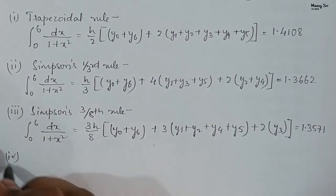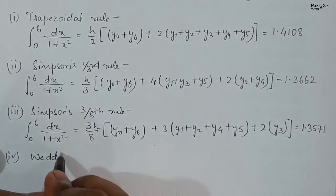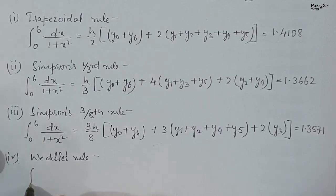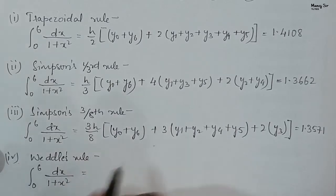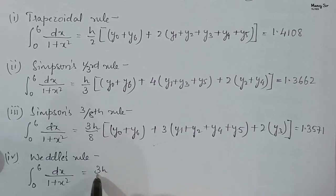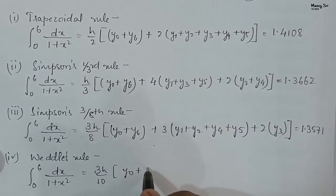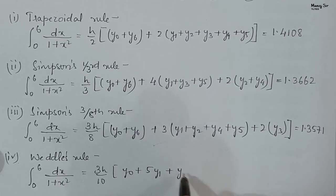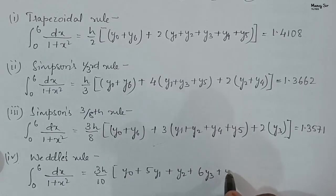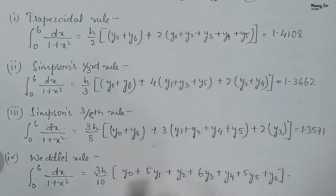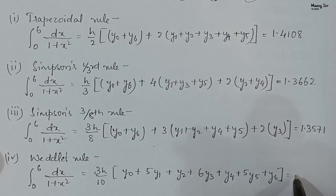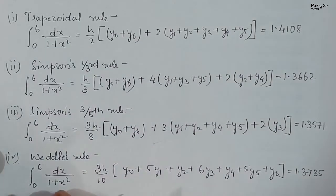Now applying Weddle's rule to ∫₀⁶ dx/(1+x²): the formula is 3h/10 × [y₀ + 5y₁ + y₂ + 6y₃ + y₄ + 5y₅ + y₆]. Substituting h = 1 and all y values, the result obtained by Weddle's rule is 1.3735.